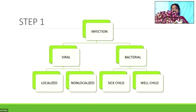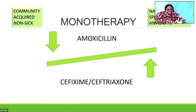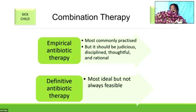In any infection, the first step is to identify whether it's viral or bacterial. Once we know it's bacterial, we determine whether it's a localized or non-localized infection, whether the host is immunocompromised or immunocompetent, or whether it's a sick child or a well child. For a well child with community-acquired infection, we resort to monotherapy with a narrow-spectrum antibiotic — amoxicillin for infections above the diaphragm, cefixime or ceftriaxone below. In a sick or immunocompromised inpatient, we resort to empirical combination therapy with broad-spectrum antibiotics.